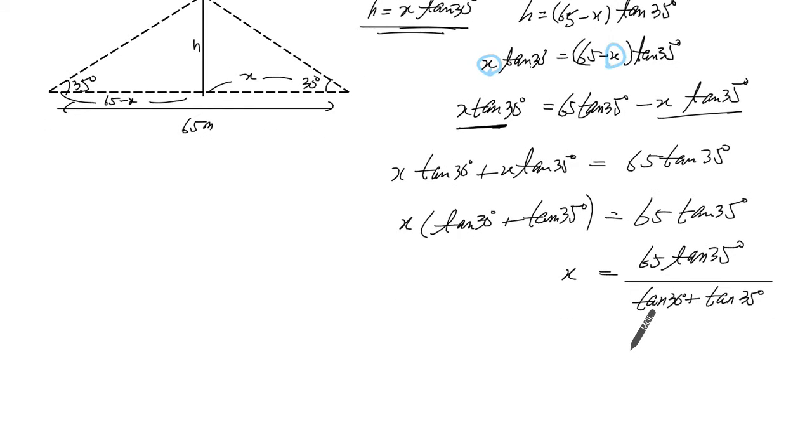So I'm just going to punch this all in the calculator. Get 35.6. Let's grab that. Plug it in here. 35.6 tangent of 30. Just multiply these two to get the height. We'll get the height of the tree to be 20.57.